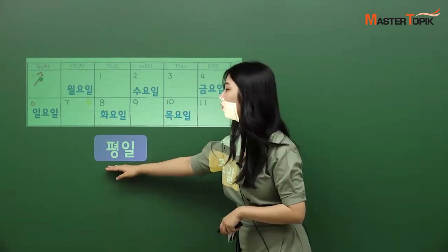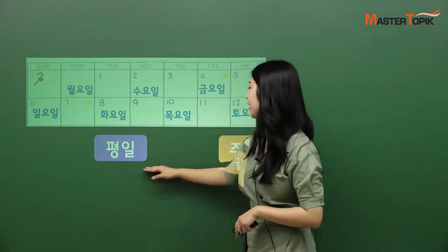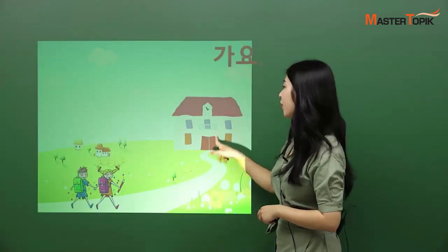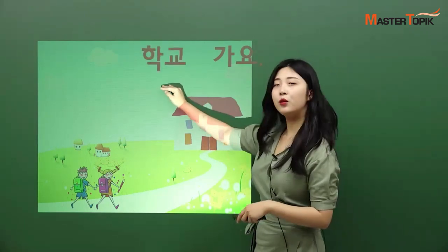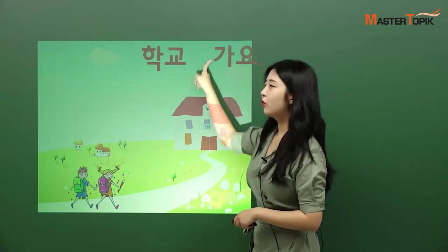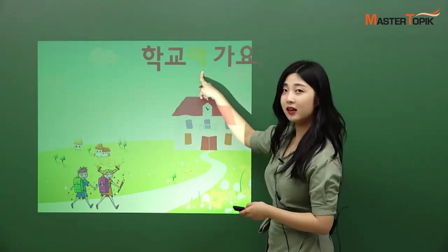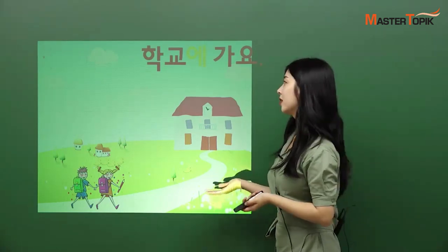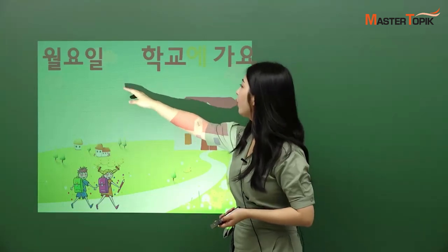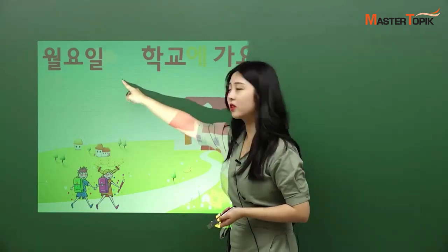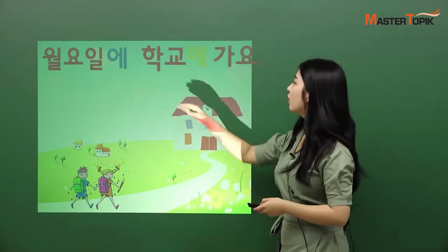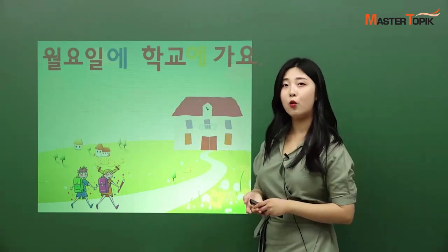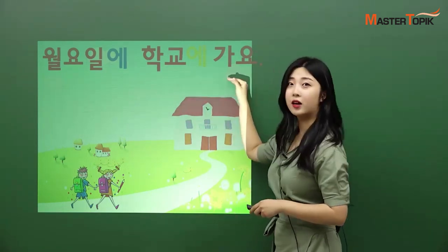We call the weekdays as 평일 in Korean. We go — where? 학교. 학교 가요. But we missed something here: 에. 학교에 가요 — it means 'go to school.' But when? 월요일. 월요일에 학교에 가요 — it means 'I go to school on Monday.'